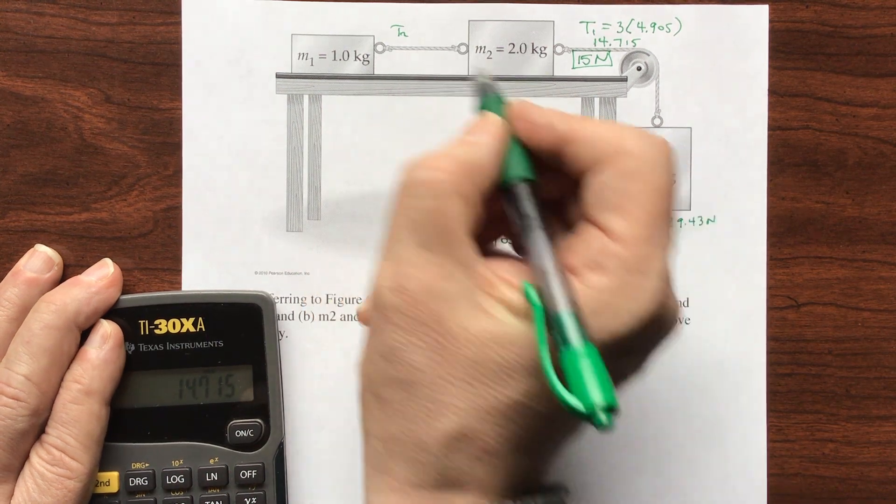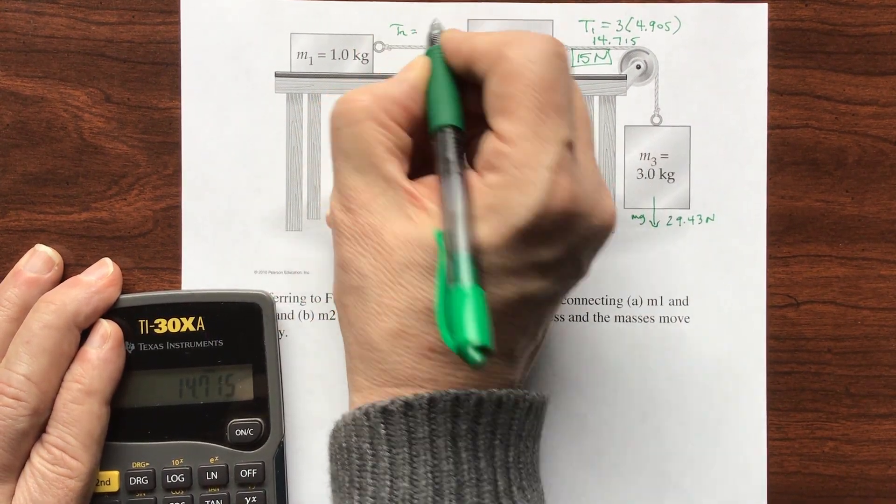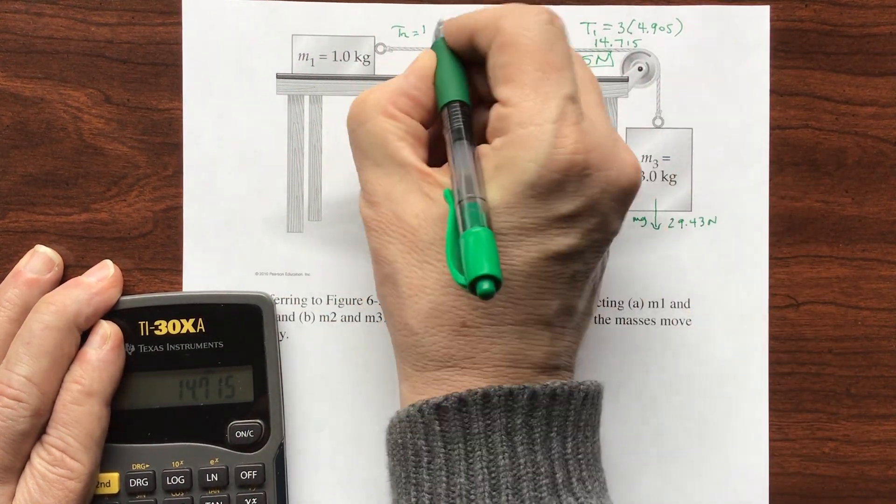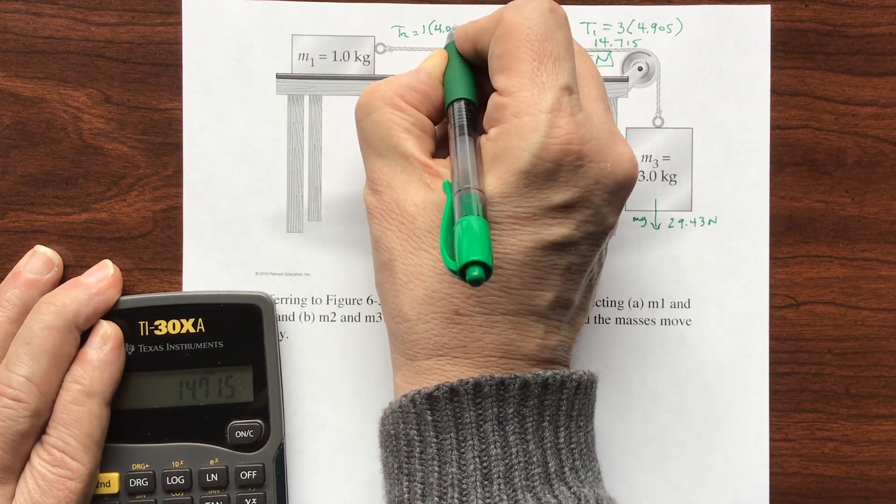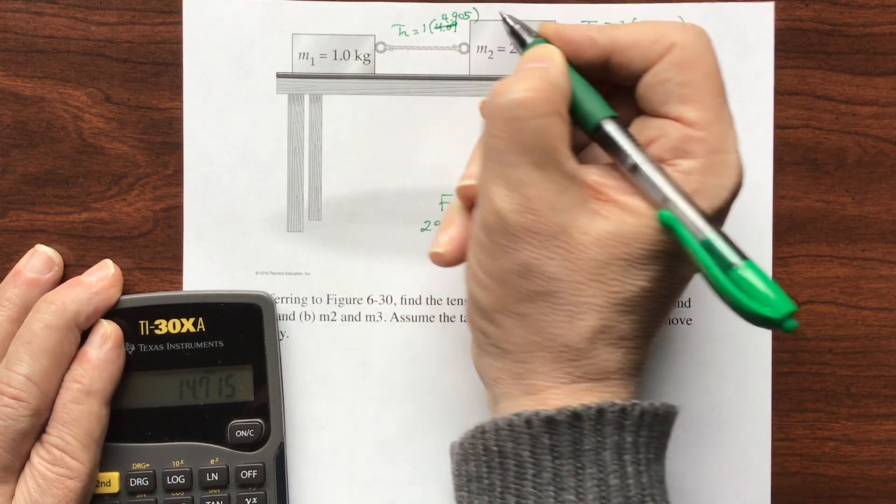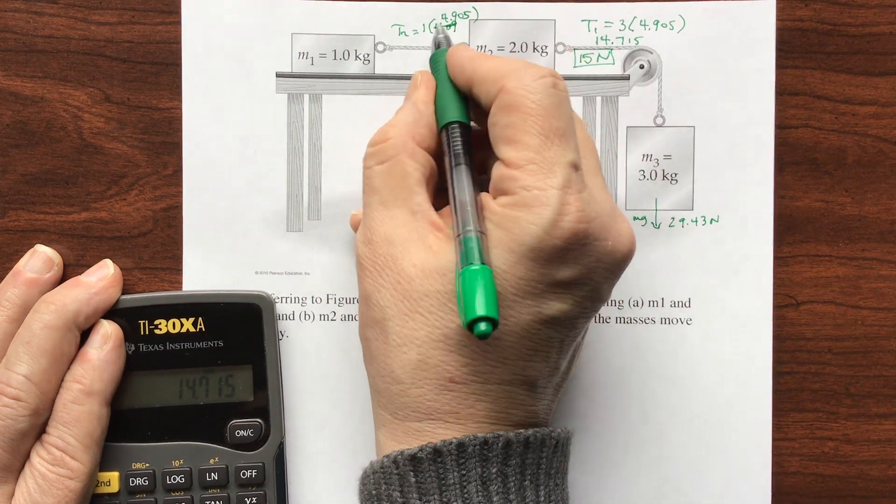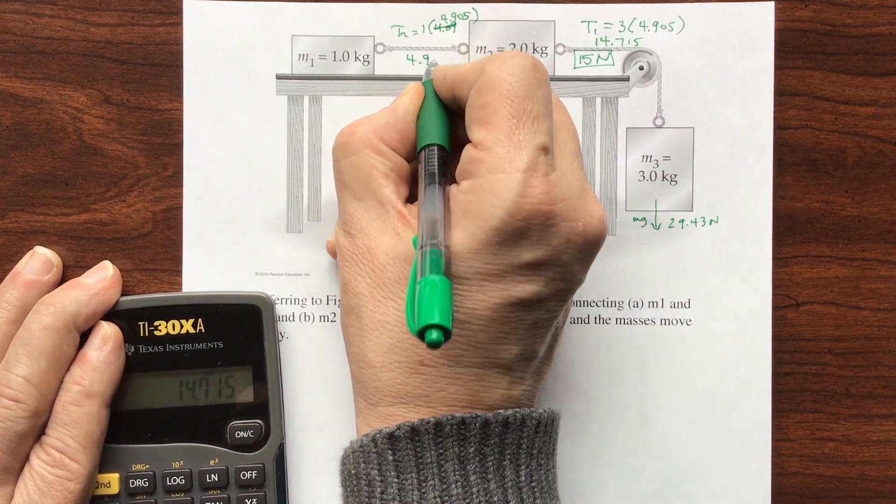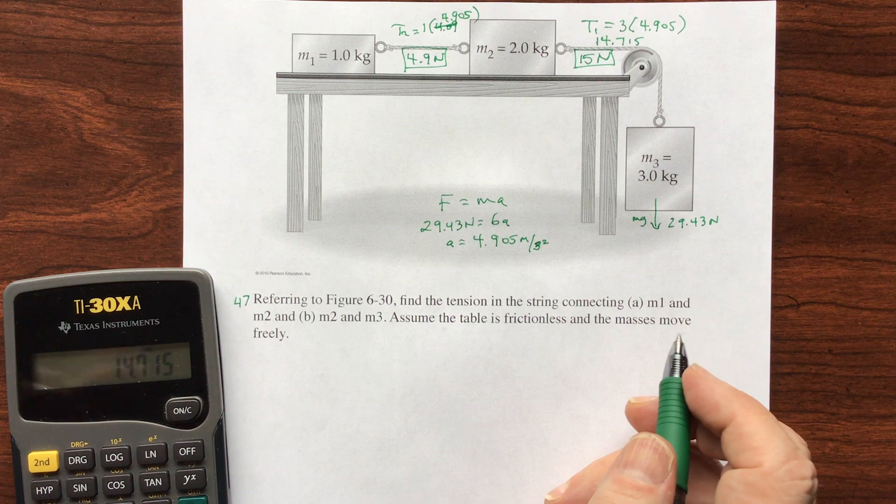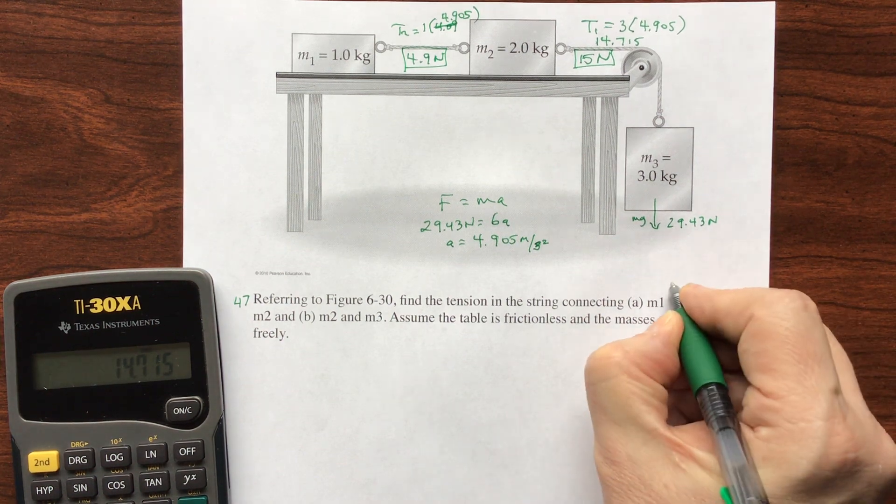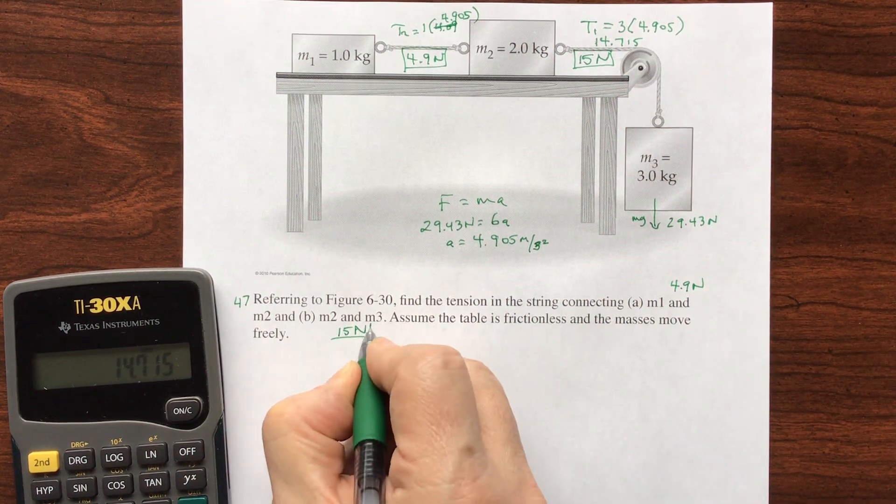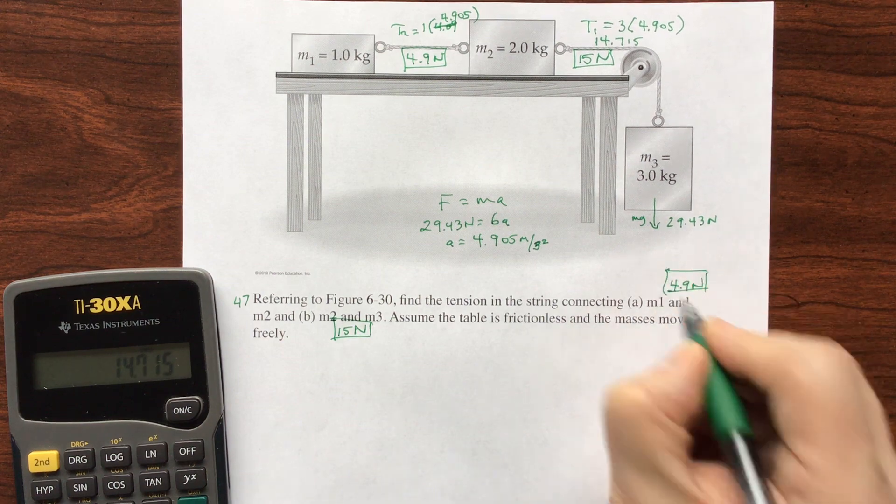Now we're going to do the same thing here. We're going to say T2 equals, we're only pulling one kilogram, so this is one, and we're pulling it at the same acceleration, 4.905. And so this is going to be, in two significant digits, 4.9 newtons. So A between M1 and M2 is going to be 4.9 newtons, and B is going to be 15 newtons. I hope that helps you.